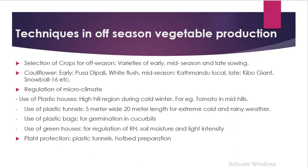For early varieties, choose carpenter case early varieties. Also late varieties like kibo giant. If I am going to produce something off-season in Kathmandu, I'll go for either pusatipali, white flats, etc., or kibo giant — mid-season varieties also — having the right crop at the right time.